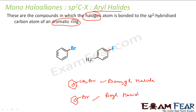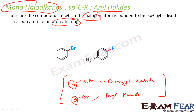Please note that all the types we have discussed — aryl halide, vinyl halide, benzylic halide, allylic halide, and alkyl halide — are all mono-haloalkanes or mono-haloarenes, meaning they each contain only one halogen atom.